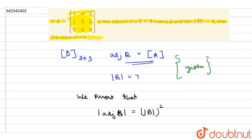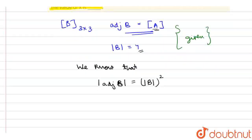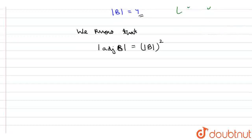Adjoint of B is equal to A and det of B is equal to 4, so now putting the values, we will get det of adjoint of B is equal to det of A, and this is equal to 4 whole square.